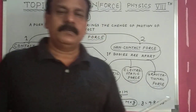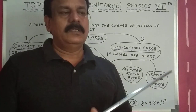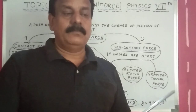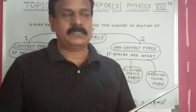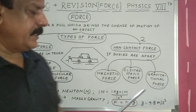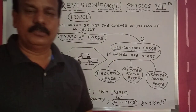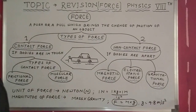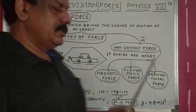Muscular force: we have seen two wrestlers fighting each other — they are applying muscular force. A bull pulling a cart uses its muscles. There are many examples of muscular force. So contact force is of two types: frictional force and muscular force.